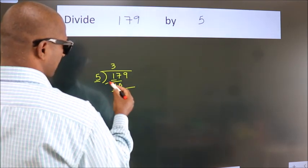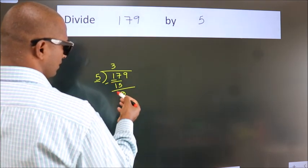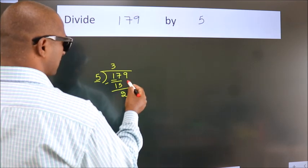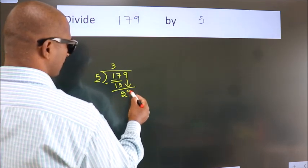Now we should subtract. We get 2. After this, bring down the beside number. So 9 down, making 29.